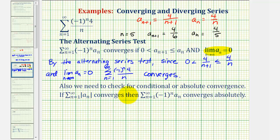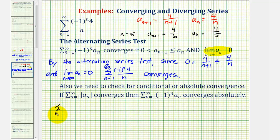However, we also need to check for conditional or absolute convergence, because we have an alternating series. To check for this, if the infinite series of the absolute value of a sub n converges, then the original alternating series converges absolutely. If this series diverges, then we have conditional convergence. Since a sub n is four divided by n and n starts at one, the absolute value of four divided by n is still just four divided by n.